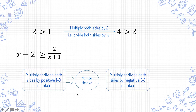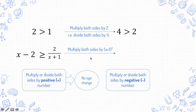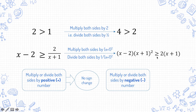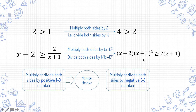Similarly, if I multiply both sides of this inequality by (x+1) squared, which is equivalent to dividing both sides by 1 over (x+1) squared, I'll have (x−2)(x+1)² on the left-hand side, and 2(x+1) on the right-hand side. And the sign remains the same, because square numbers are positive — no matter what value x takes on, (x+1)² is still positive, so you can do this.